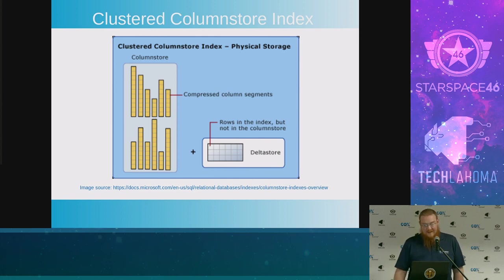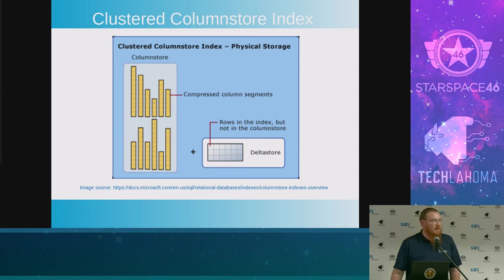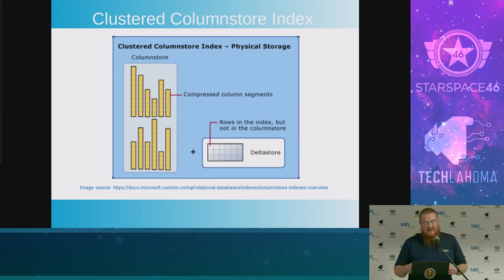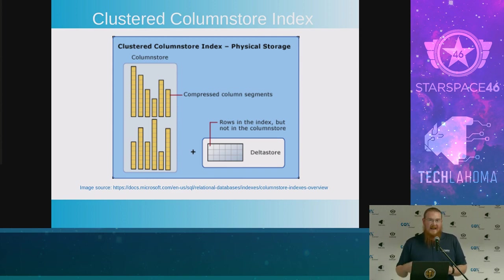When you start digging around on these things, you'll see that there are usually several delta stores, especially on a hot table. You really don't want hot data in a column store because it's expensive to move in and out. But if there are lots of reads and writes going on, if the relational database system hits a lock while it's trying to insert, it will open up a new delta store. I haven't found a hard limit on that, which is kind of fun if you're trying to mess up SQL Server.